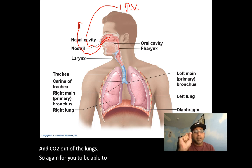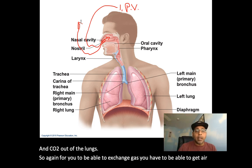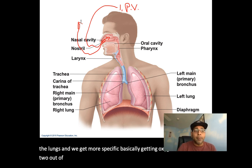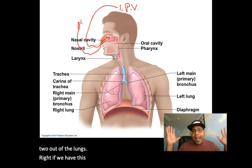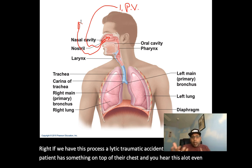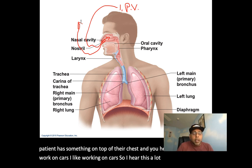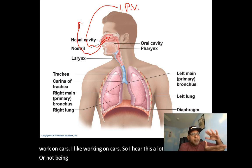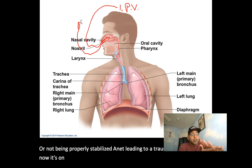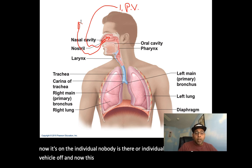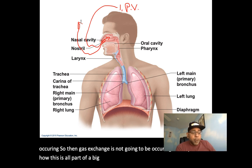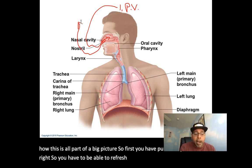So for gas exchange you have to get air into and out of the lungs. Consider a traumatic accident where a patient has something on top of their chest — like a car that's not properly stabilized falling on someone. Now pulmonary ventilation isn't occurring, so gas exchange isn't occurring. You can see how it's all part of a bigger picture: first you have pulmonary ventilation — you have to be able to refresh these gases.